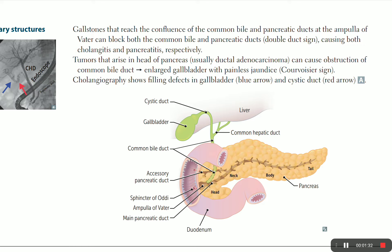A tumor arising in the head of the pancreas, usually ductal adenocarcinoma, can cause obstruction of the common bile duct, leading to an enlarged gallbladder with painless jaundice. We call this Courvoisier's sign.